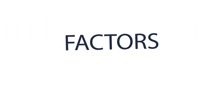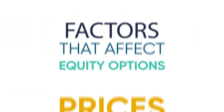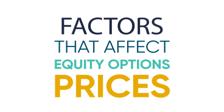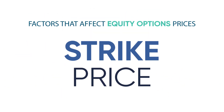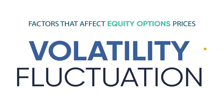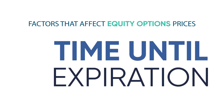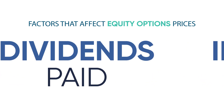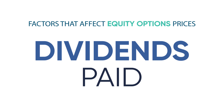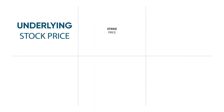There are multiple factors that affect equity options prices: the underlying stock price, the strike price, volatility or fluctuation of the stock price, time until expiration, interest rates, and dividends paid by the underlying stock. These are the inputs for an options pricing model.